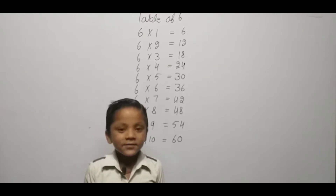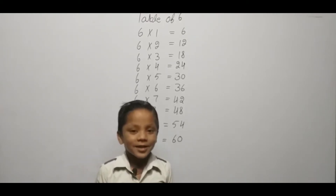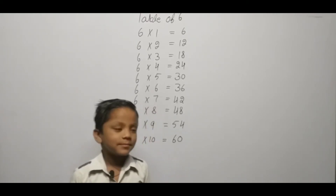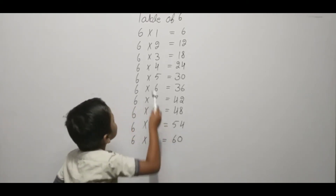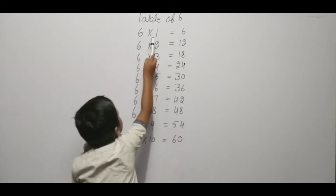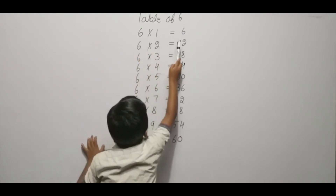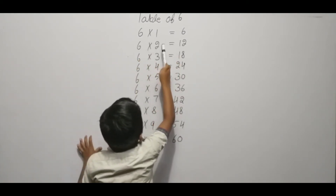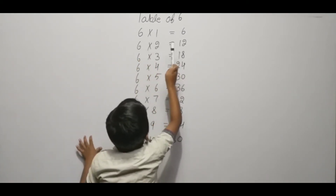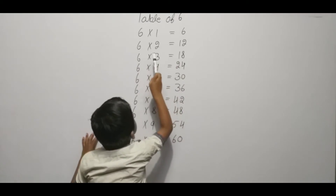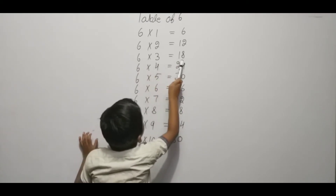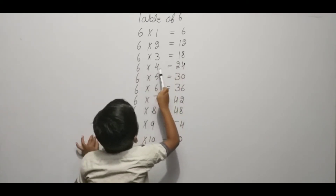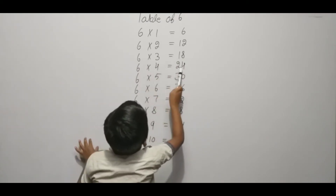Hello friends, we are learning table of six. Six one ja six, six two ja twelve, six three ja eighteen, six four ja twenty-four, six five ja thirty.